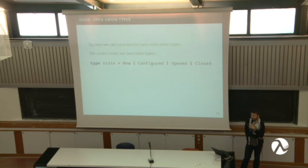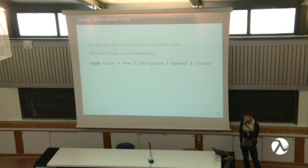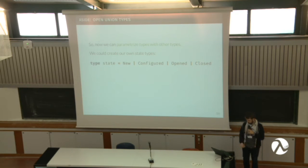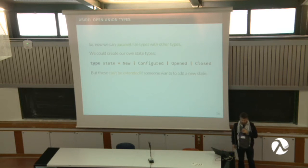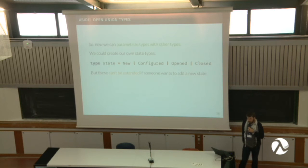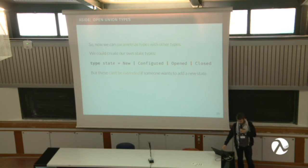Now we have a way to parameterize our types. We define the types we want to parameterize. We've seen these four states a handle can have, so let's define a new type — the state of a handle — and say it's either a new handle, or configured, or opened, or even closed. But what if we want to extend it? You cannot just reopen a type and add new constructors to it. But OCaml has a feature called open union types, also called polymorphic variants.